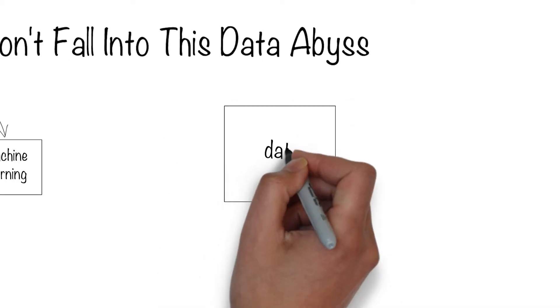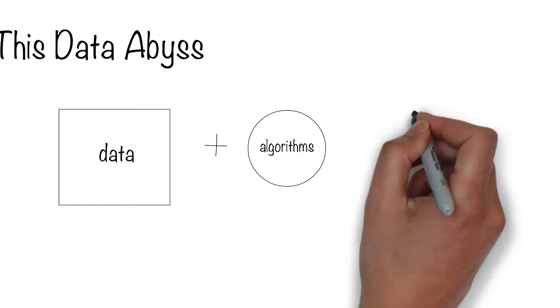There are three parts to machine learning: the data, the algorithms, and the machines.